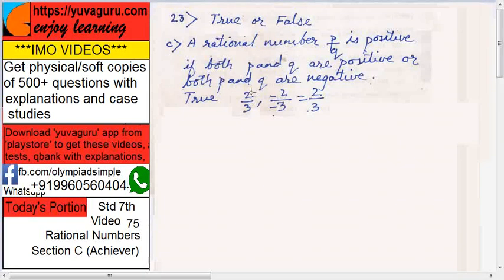Yeah, that is true because this is also positive and this is also positive - minus minus gets cancelled. So -2/3 upon -3/3, minus gets cancelled.